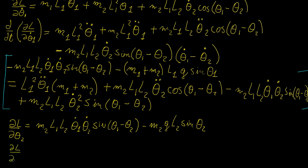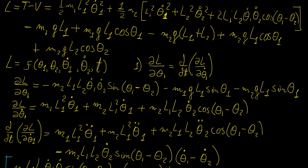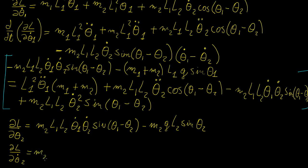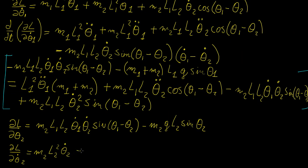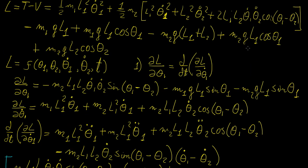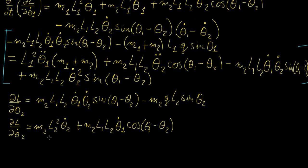Now we differentiate the Lagrangian with respect to theta2 dot, the angular velocity of the second body. The squared theta2 dot term gives M2 L2 squared theta2 dot (the factor of 2 cancels). The cross-term contributes M2 L1 L2 theta1 dot cosine(theta1 minus theta2). We then take the time derivative of this quantity.